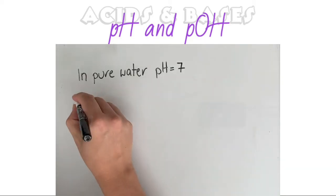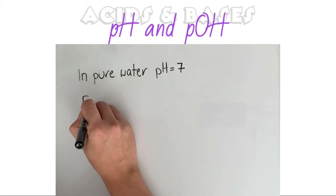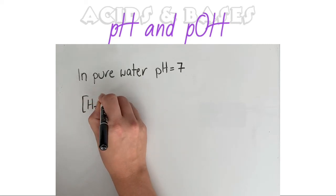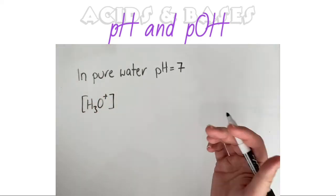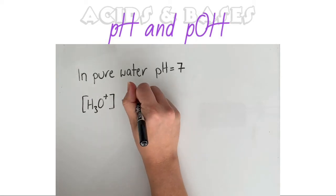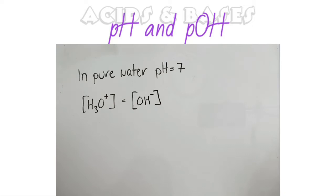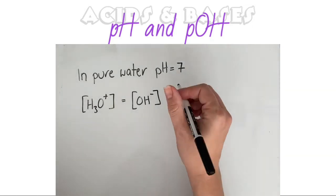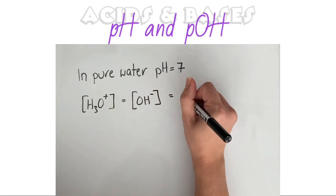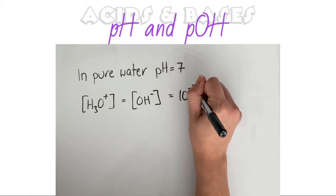So in pure water, the concentration of the hydronium ion or the H plus ions are equal to that of the hydroxide ions. And that concentration of each of those are equal to 10 to the power of negative 7.